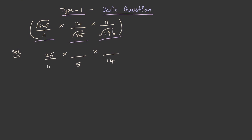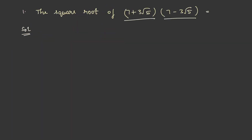Writing the remaining values: 11, 14, and 11. The 11s and 14s cancel out, leaving 25 divided by 5, and this value is equal to 5. Pretty simple, isn't it?